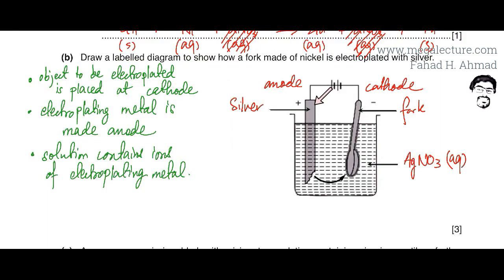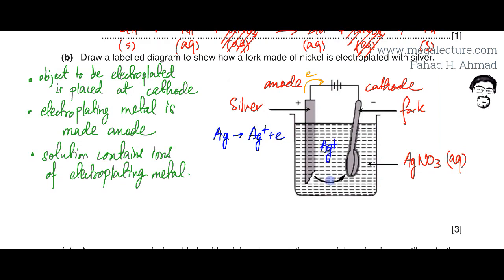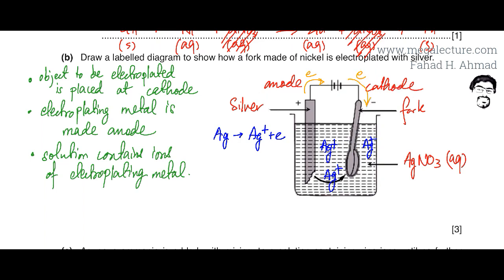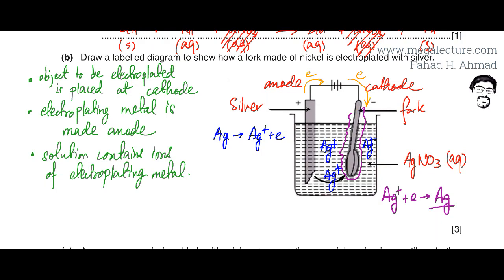Explaining how electroplating works: the positive terminal of the battery pulls electrons from the silver anode, causing silver to lose electrons and form Ag⁺ ions that mix into the solution. These silver ions are attracted to the negative cathode. At the cathode, the battery supplies electrons that the silver ions gain, and silver metal deposits as a coating on the fork.